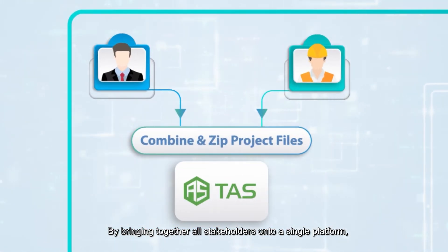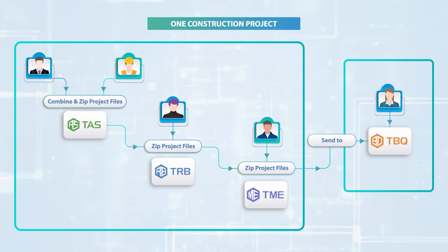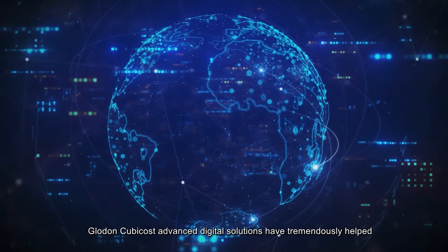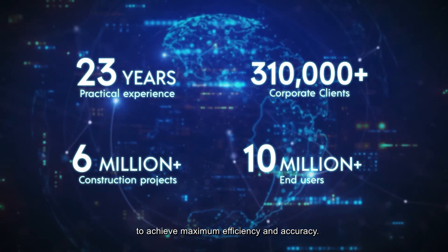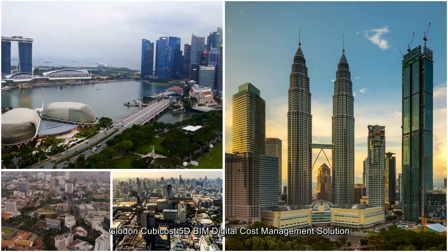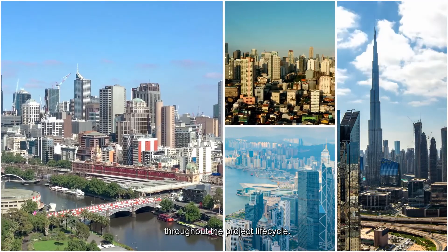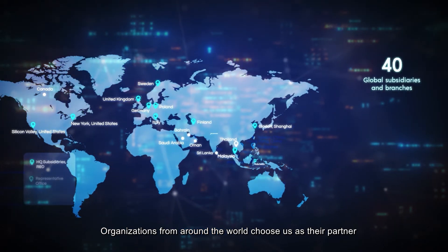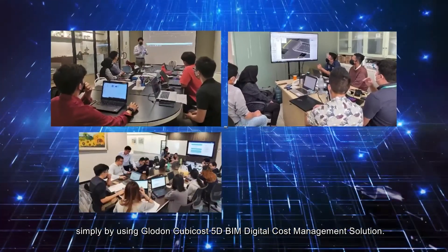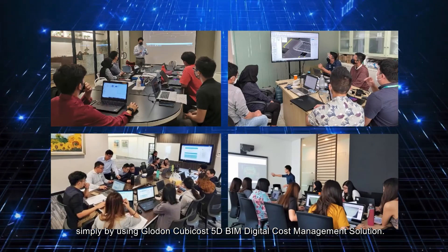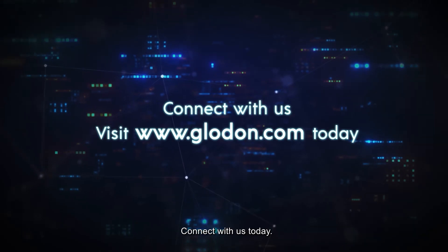By bringing together all stakeholders onto a single platform, Glodon QBiCos ensures smooth flow of information and streamlined work processes between team members. Glodon QBiCos Advanced Digital Solutions have tremendously helped AEC firms to accelerate their efforts towards digital transformation. To achieve maximum efficiency and accuracy, Glodon QBiCos 5D BIM Digital Cost Management Solution has been a cornerstone of the construction industry and provides complete support to users throughout the project lifecycle. Organizations from around the world choose us as their partner to make cost management and team collaborations smoother than ever. Glodon QBiCos — the number one trusted 5D BIM Digital Cost Estimation Solution in Asia. Connect with us today.